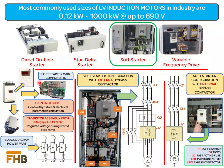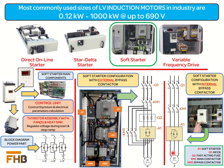The soft starter configuration in power systems for starting an induction motor is developed with either an external or an internal bypass. The main function of the soft starter is to support the starting of the induction motor at the desired current and torque value. Once the motor is started and reaches its full speed, it is unnecessary to continuously pass electrical power through the soft starter's solid state power circuit. The external or internal bypass is used to divert power through an alternate route once the motor is started, reducing heat losses in the solid state section. In case of an external bypass, a separate power contactor is used. Some soft starters are designed with an internal bypass contact, in which case no external bypass contactor is required.